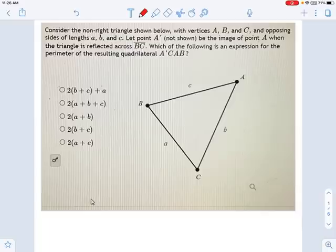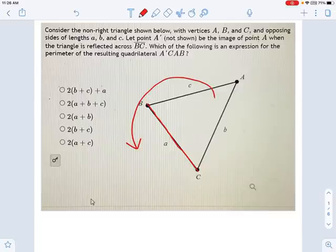A reflection means you're taking a mirror image or rotating something around a certain line, and the line BC is right here. So if I'm going to rotate the triangle around that line, it means I'm taking this whole thing and flipping it over like that.